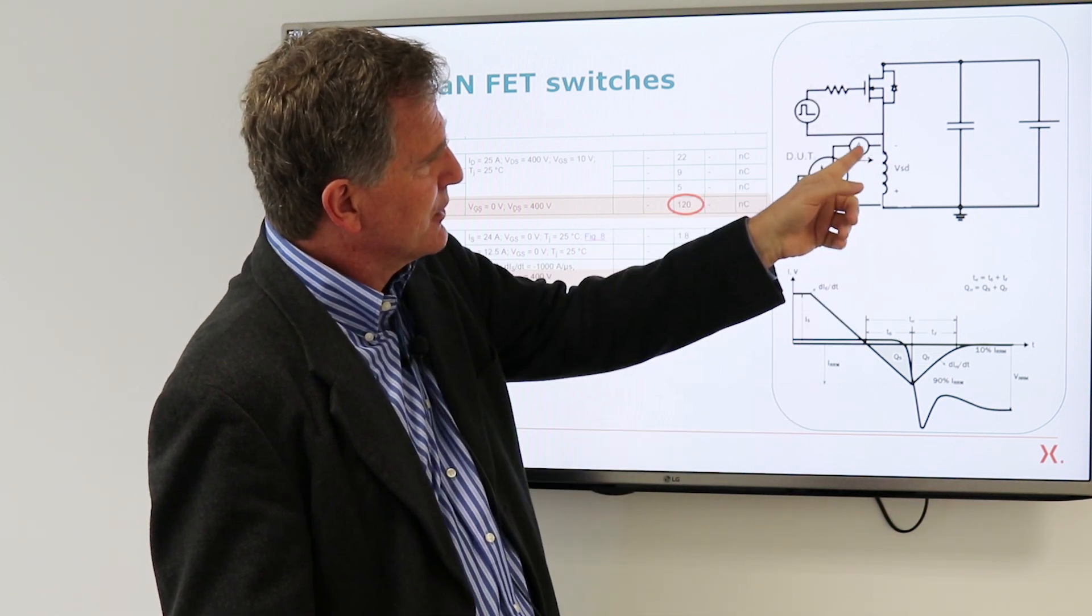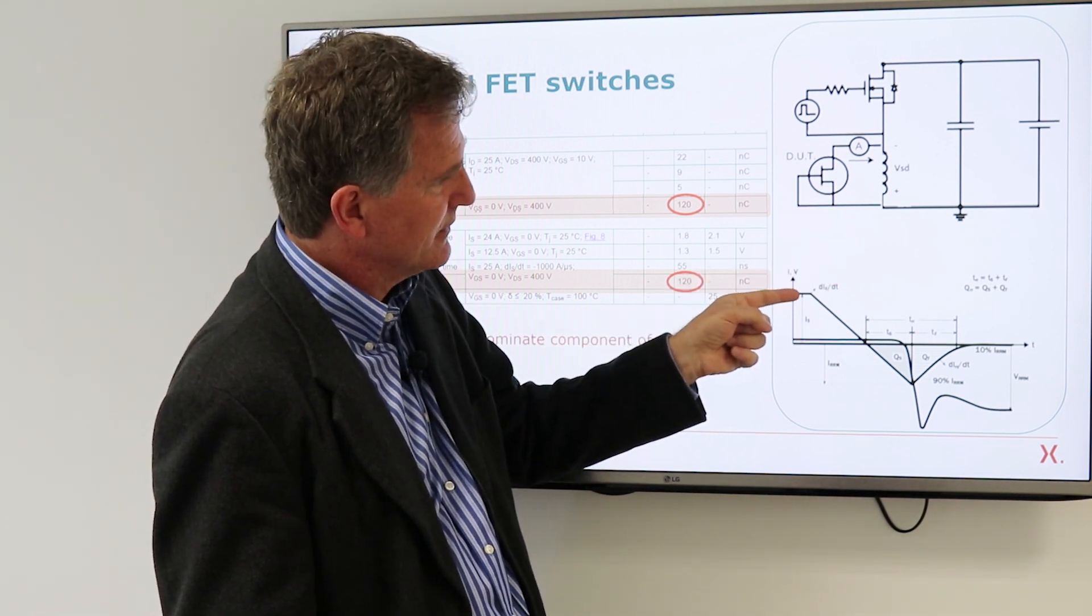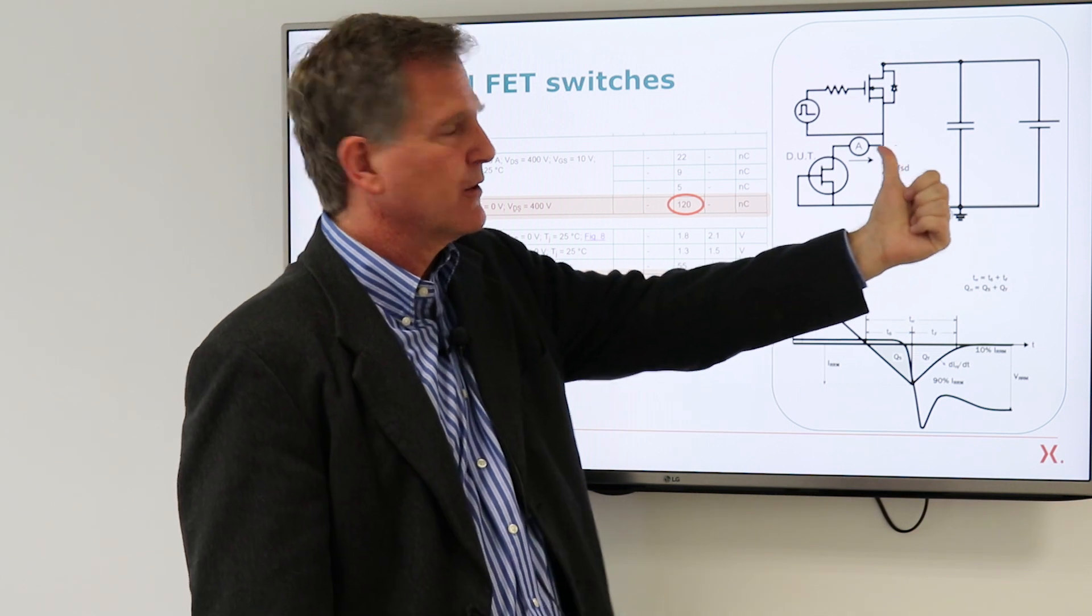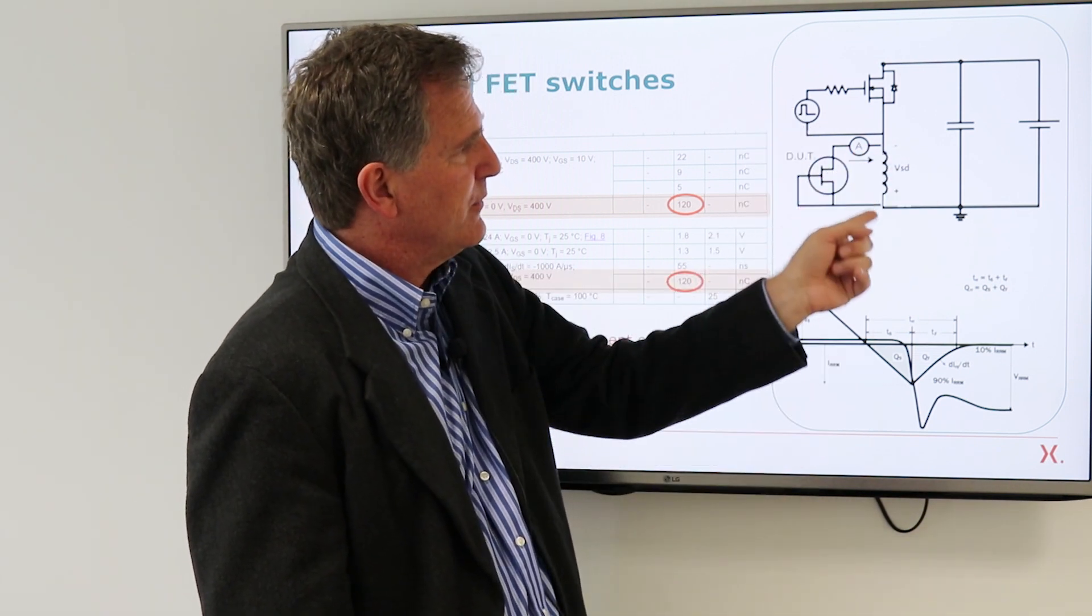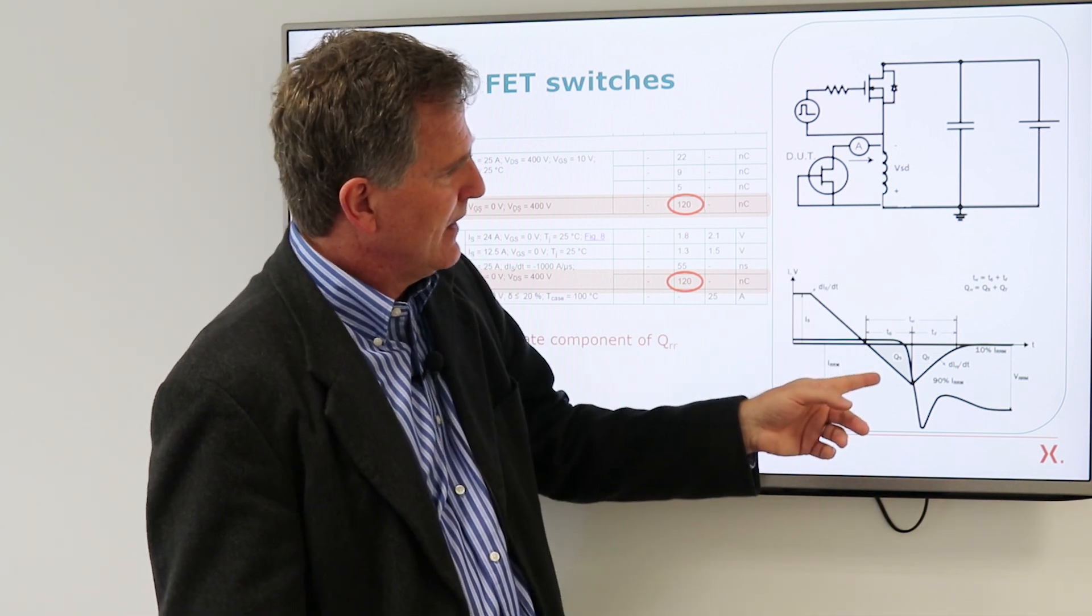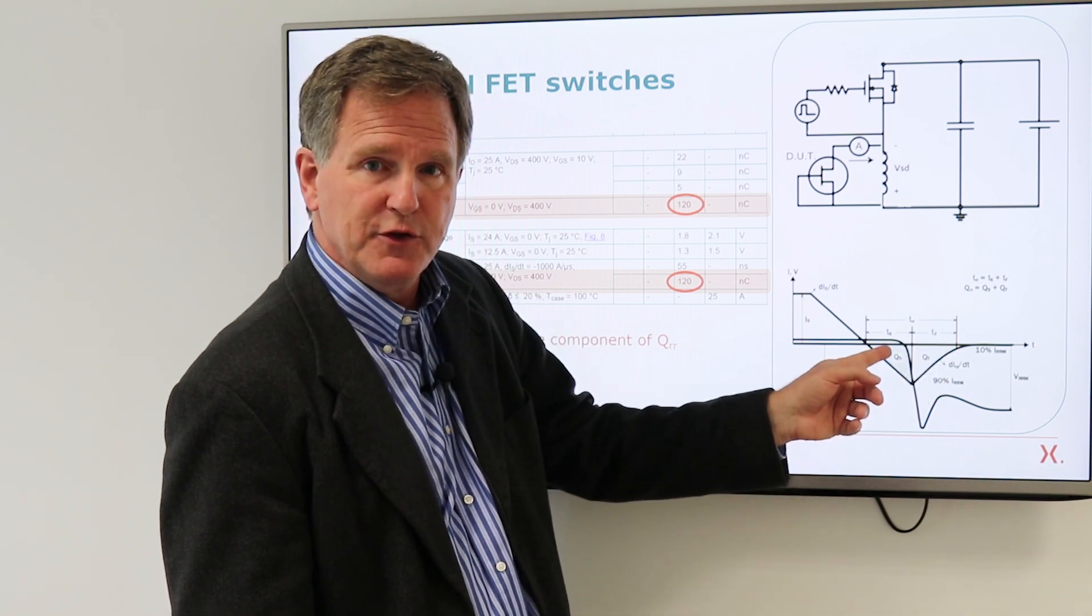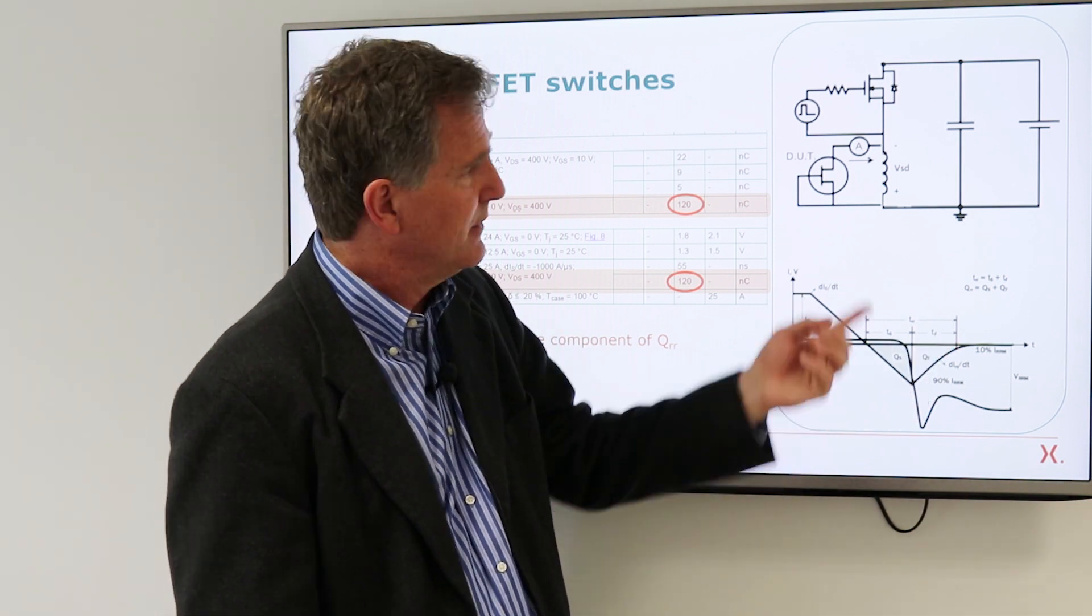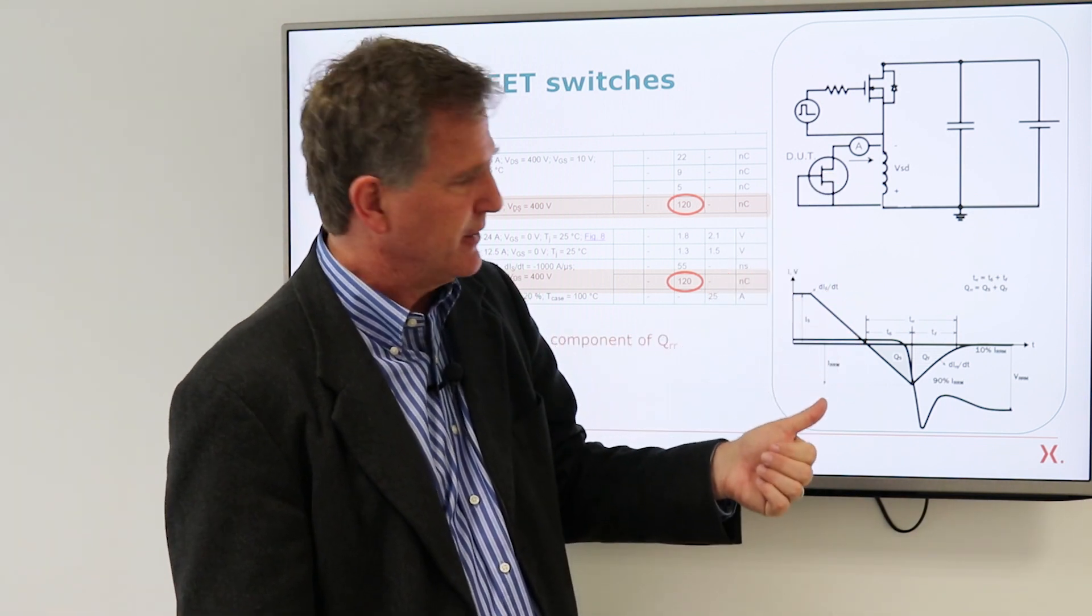And then the opposite switch will turn on and force a transition at the switching node from low voltage to high voltage. And in the process, the current in the device under test will change from the freewheeling current to some negative current, current going this way, up until the point that we're blocking the full DC voltage. So if you make an integral of this negative current,